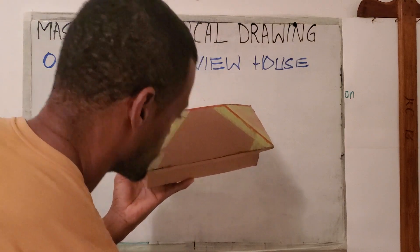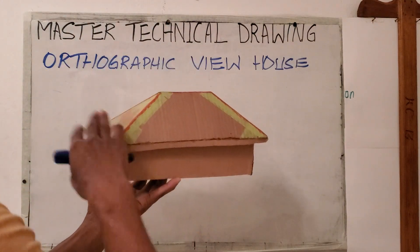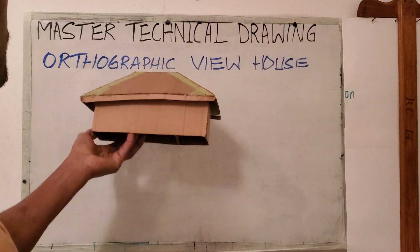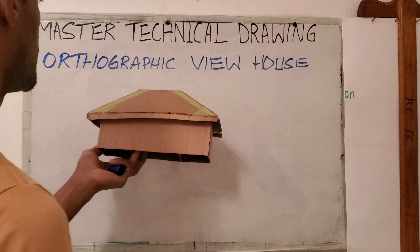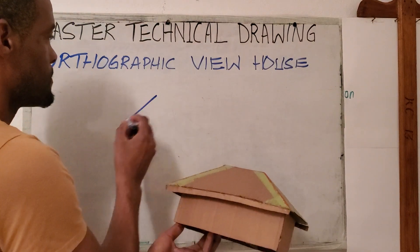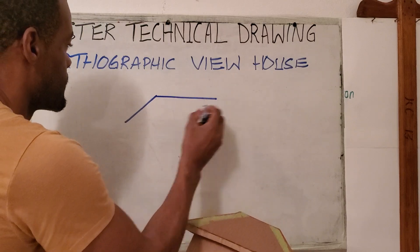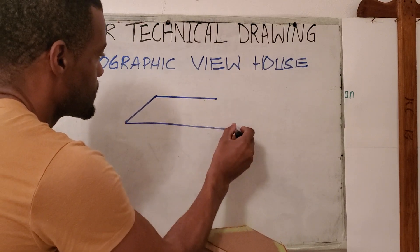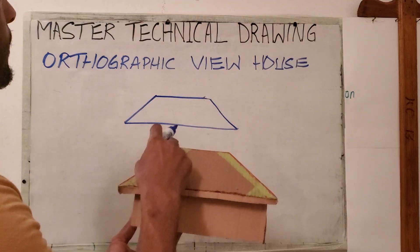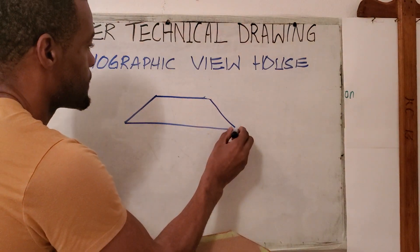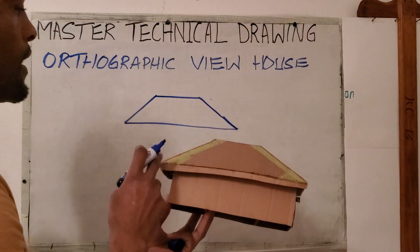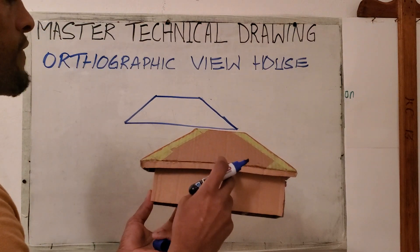This is the isometric view — view one, view two, view three. Looking from the front, we would have the pitch on this side and the pitch on the other side, and of course we have the fascia board.